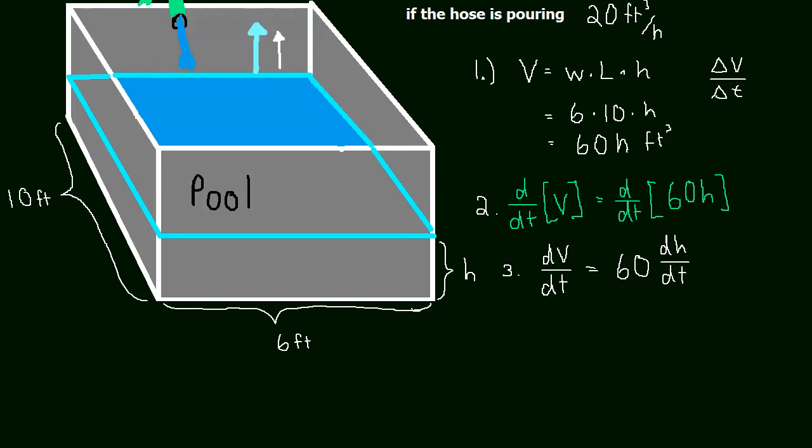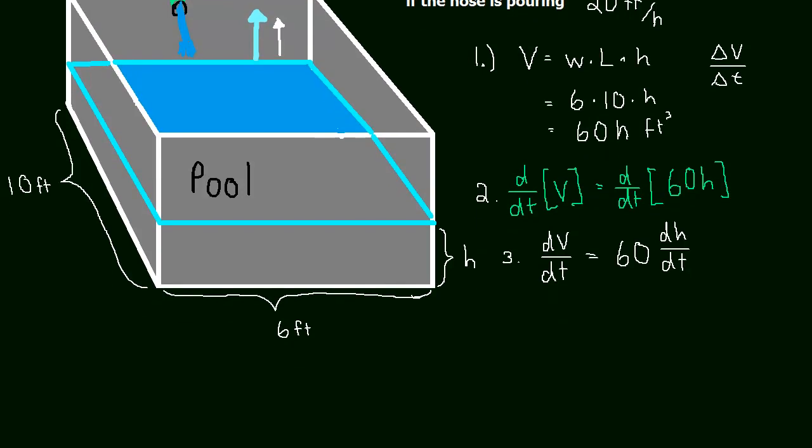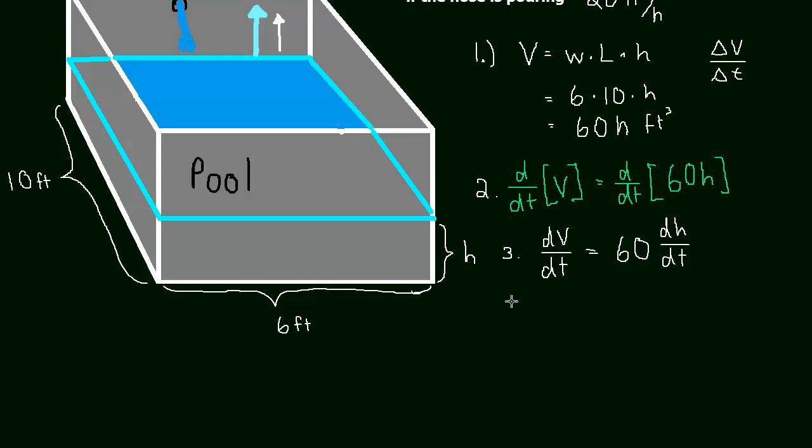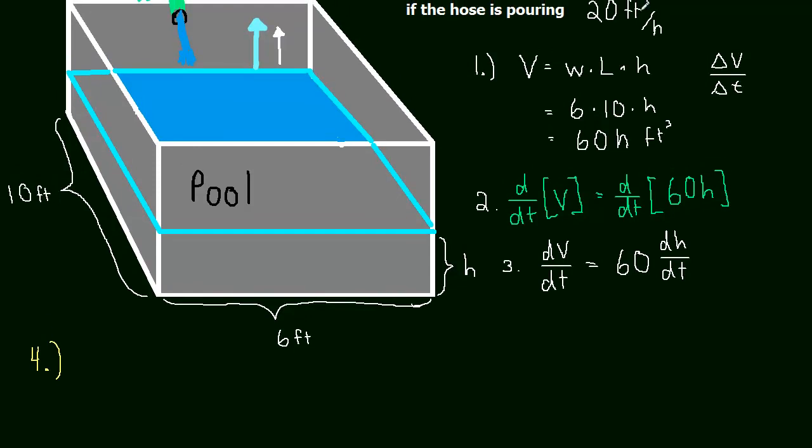Well let me scroll down a little bit, create a little bit more room. So step 4, the derivative, the rate at which the volume is changing is given to us, 20 feet cubed per hour. So dV/dt is just going to be 20 feet cubed per hour. And this will equal 60 dh/dt.